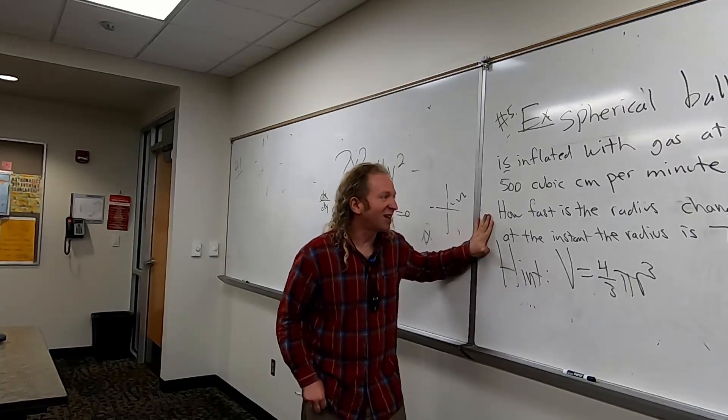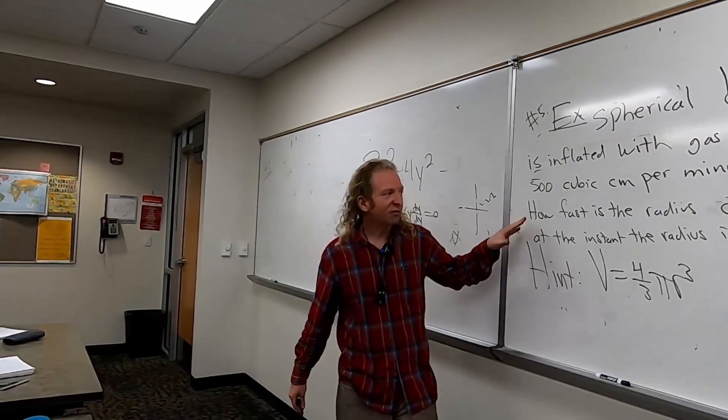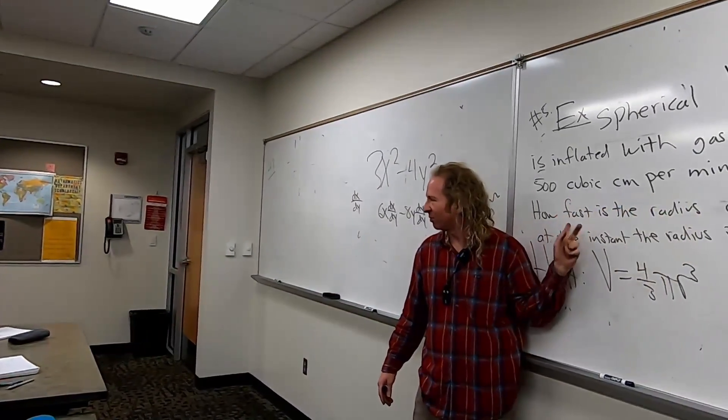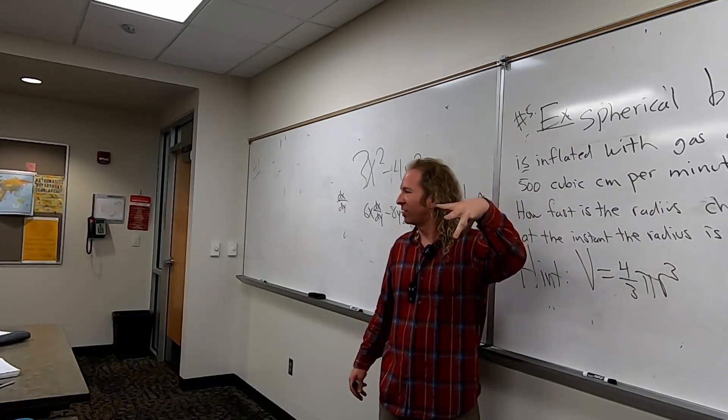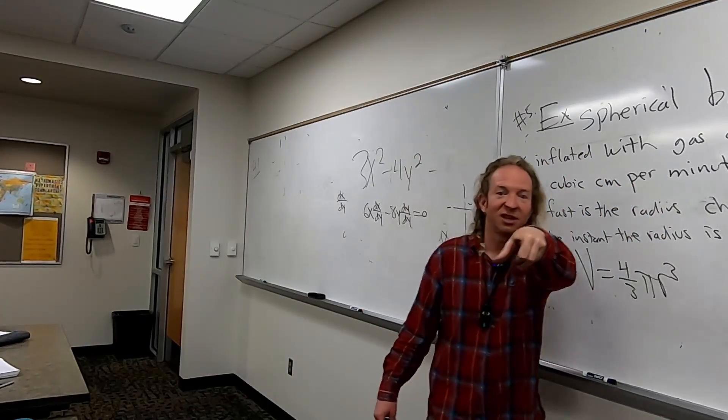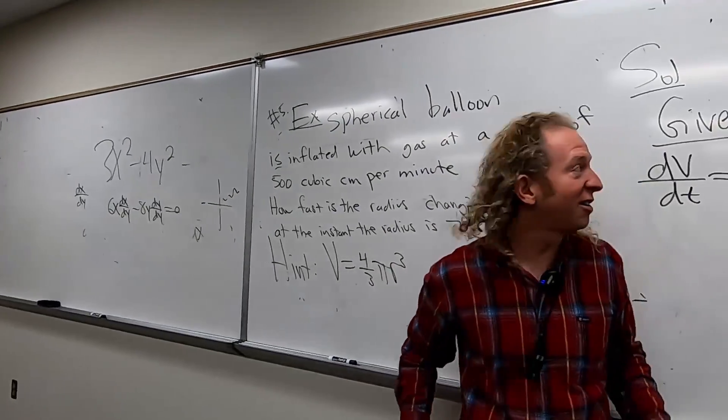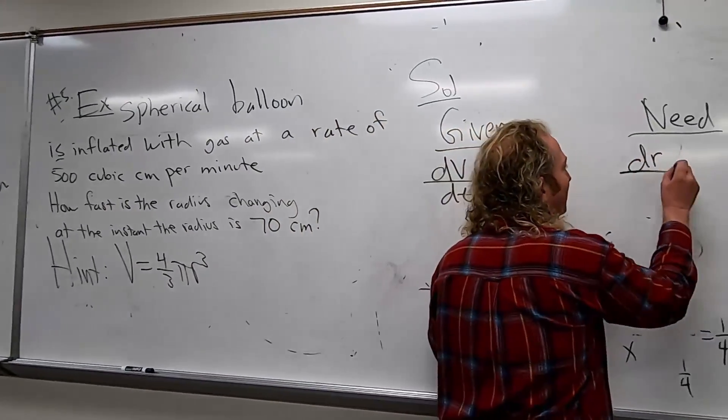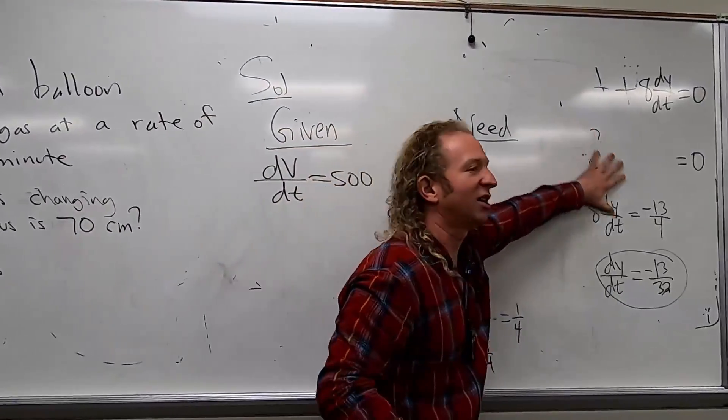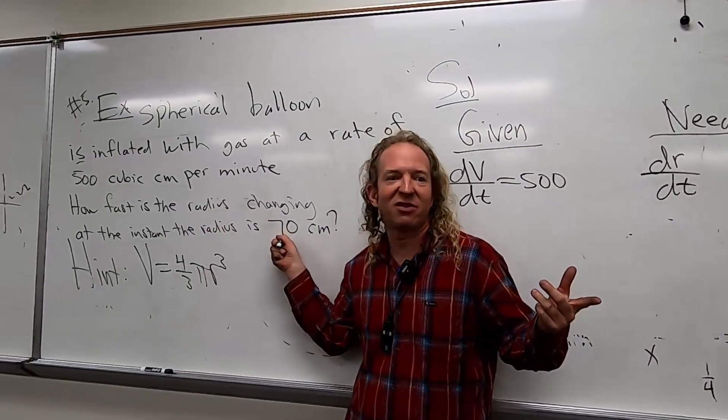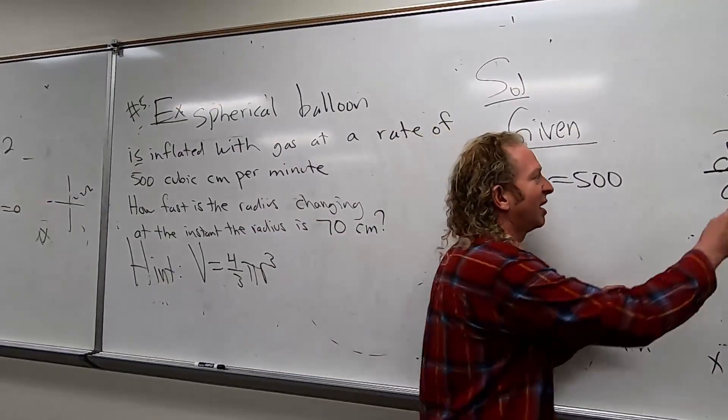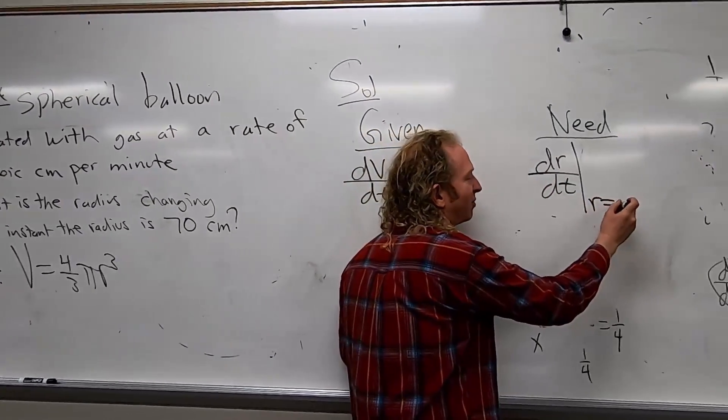We need, so how fast is the radius changing? So that's the rate of change of the radius, right? What would that be called in math terms? What is that? The rate of change of the radius. What is it? dr/dt. dr/dt. So we need dr/dt. And here's where it gets interesting. We need it at the instant the radius is 70 centimeters. So we need it when r equals 70.